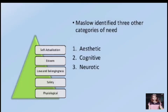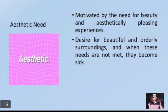Maslow identified three other categories of need. Number one is aesthetic needs. Number two is cognitive needs. And number three is neurotic needs. Aesthetic needs are motivated by the need for beauty and aesthetically pleasing experiences — a desire for beautiful and orderly surroundings — and when these needs are not met, people become sick. Maslow stated that humans need beautiful imagery or something new and aesthetically pleasing to continue up toward self-actualization. Humans need to refresh themselves in the presence and beauty of nature, carefully absorbing and observing their surroundings to extract the beauty the world has to offer. This need leads to a beautiful feeling of intimacy with nature and everything beautiful.